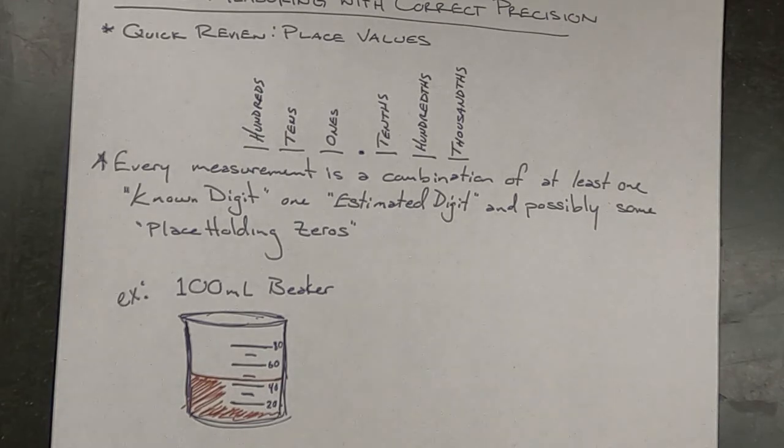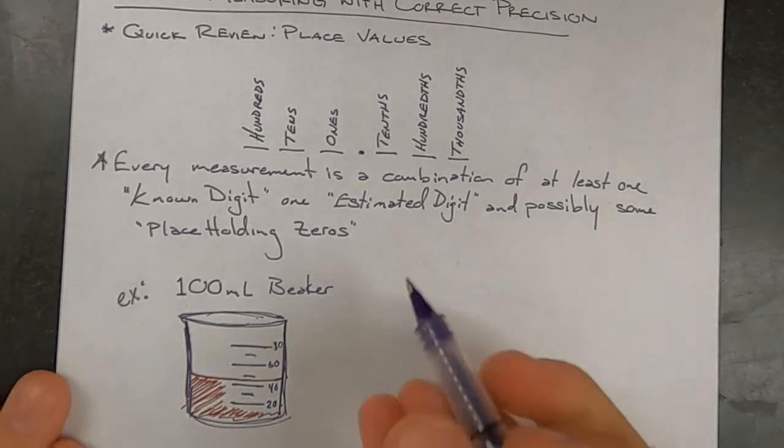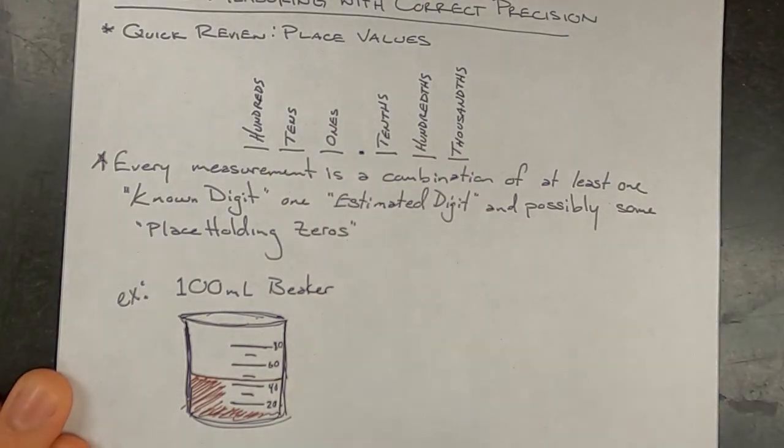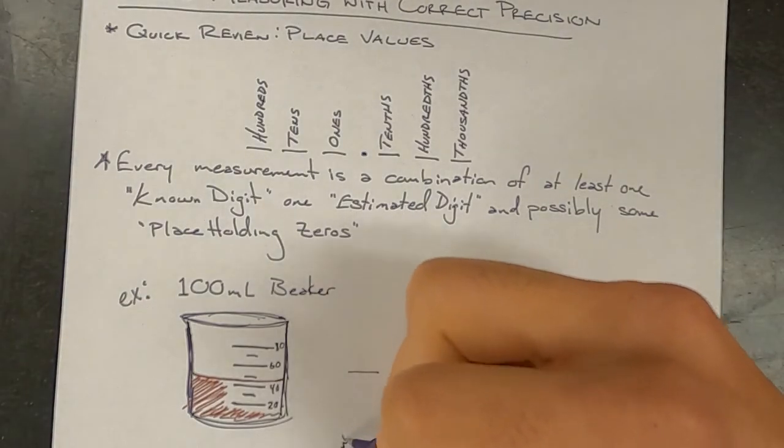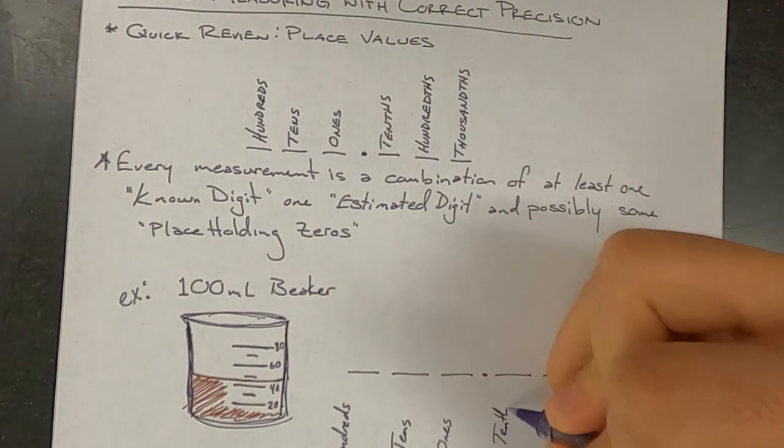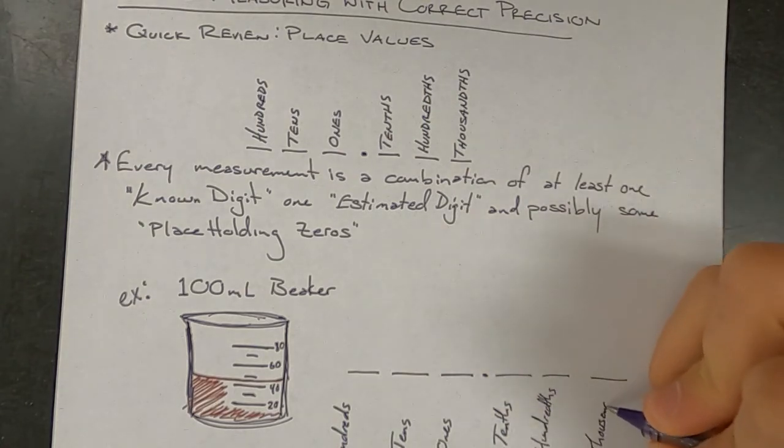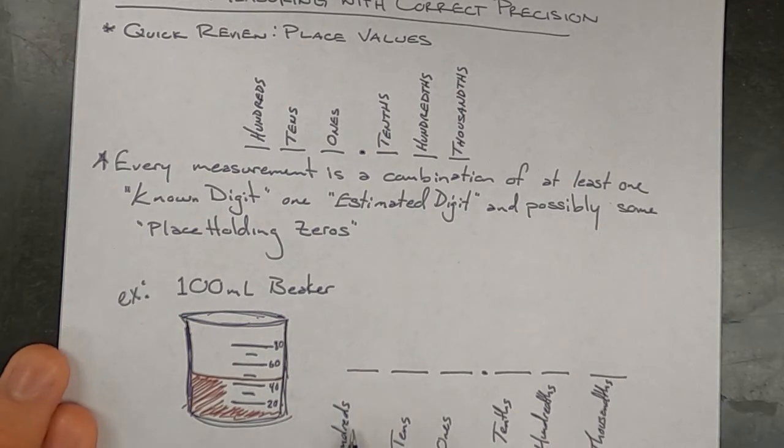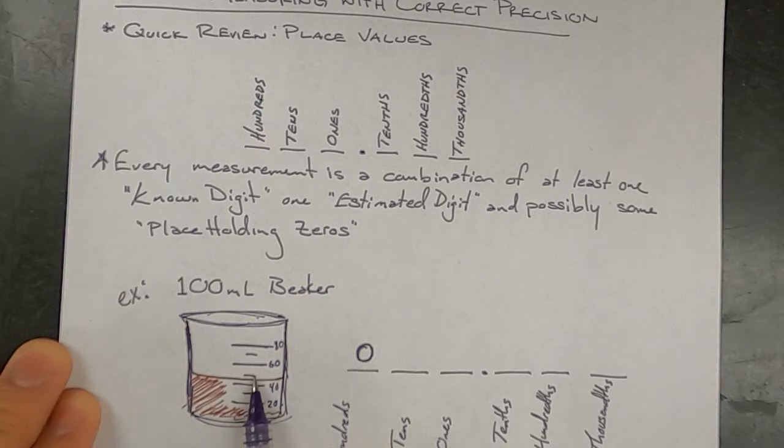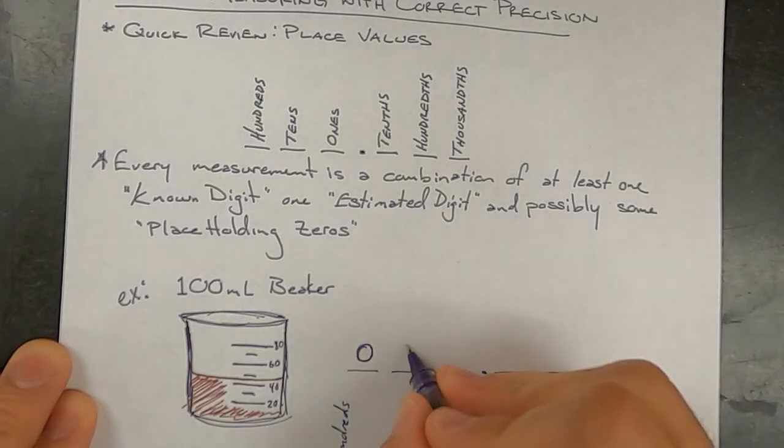And now to look at what I mean by a known digit or an estimated digit, I'm going to draw lines that represent these place values again. We'll start with the biggest place value, the hundreds place. Now I think we can look at this and we can all agree that the hundreds place is zero. It's not even to 100 milliliters. The tens place is what we'll look at next. And this line represents 40 milliliters. This line represents 50. The water level is between them. And so we know that it has to be in the 40s. The value for tens has to be four.